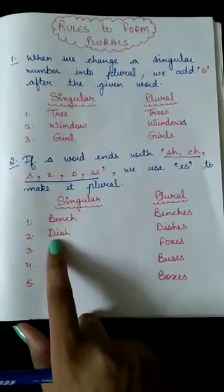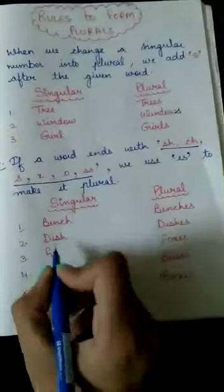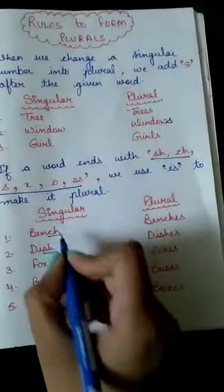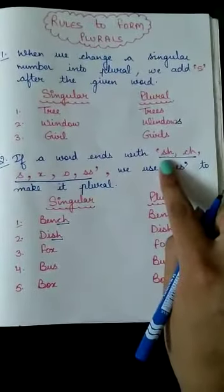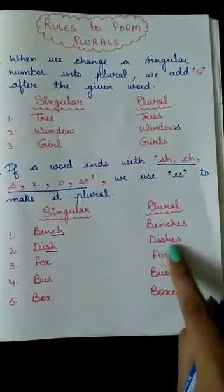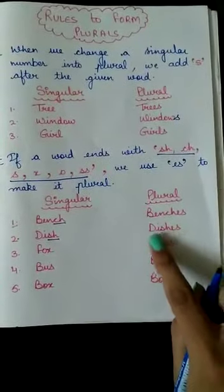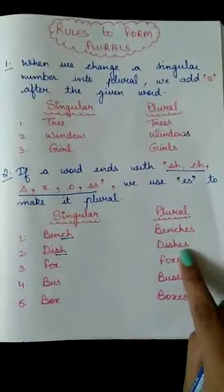Now, the next word is dish. Now, we are having S, H at the end. Again, S, H is in this list. So, what will we put? Dishes. I will write D, I, S, H, E, S. Dishes.